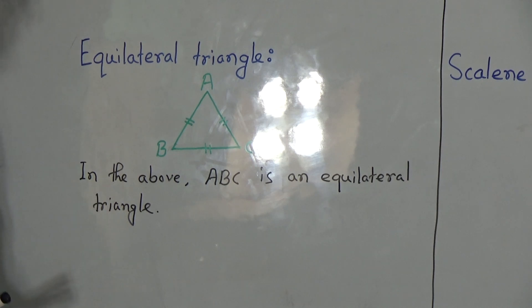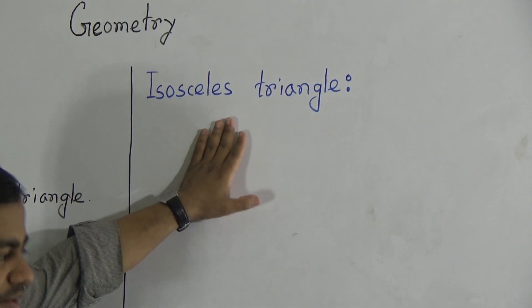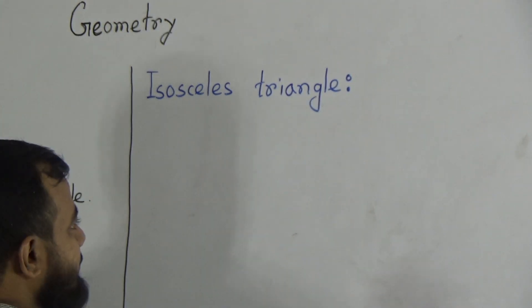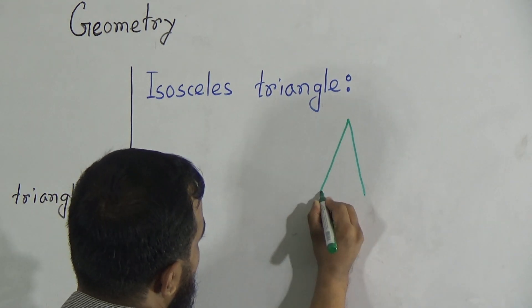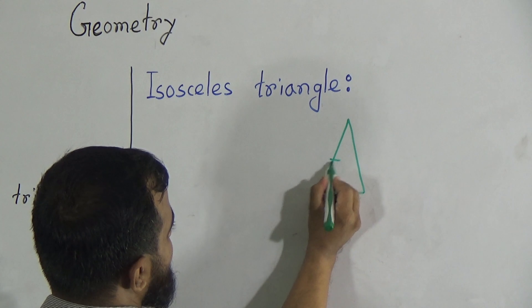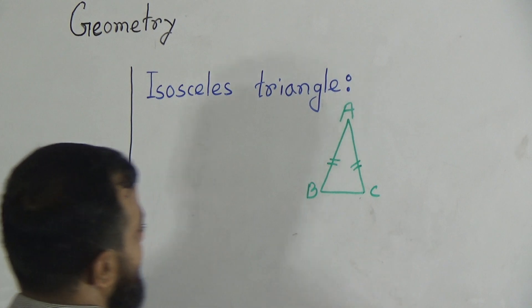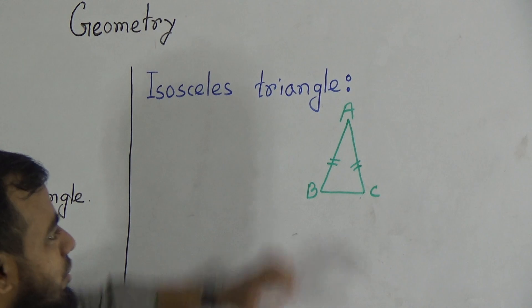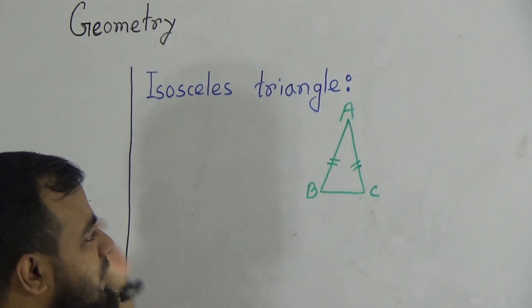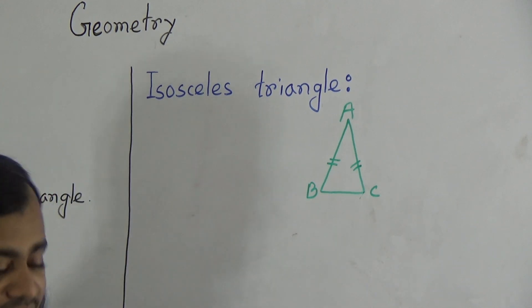The next one is the isosceles triangle. Which triangle has two sides equal to each other? That triangle is called an isosceles triangle. Two sides will be equal to each other. Suppose this side and this side are equal to each other, and this third side is not equal. Vertices A, B, C — this triangle A, B, C is an isosceles triangle because side AB and side AC are equal to each other. Which triangle has two sides equal to each other, that triangle is called an isosceles triangle.